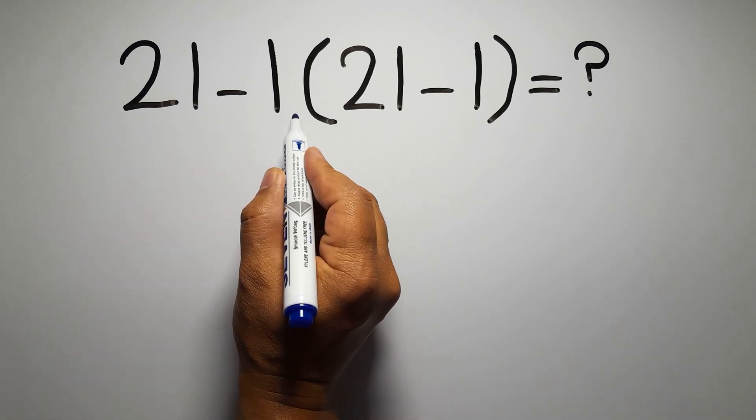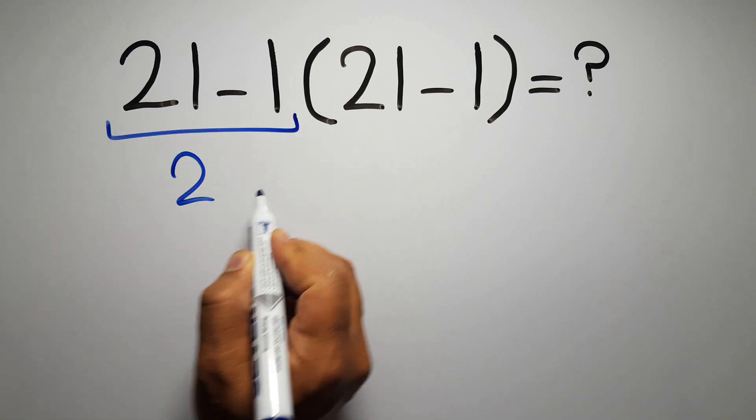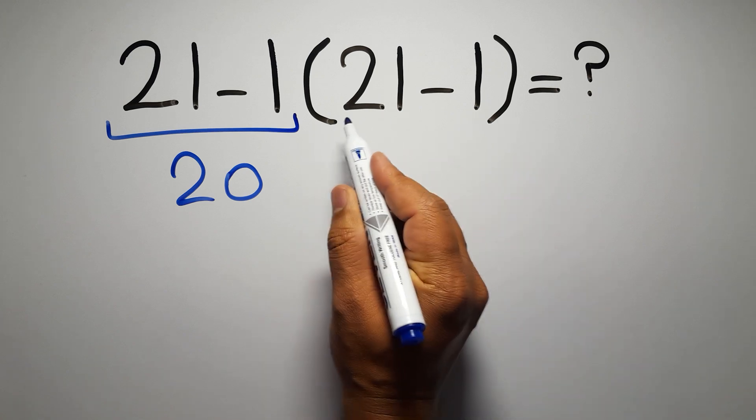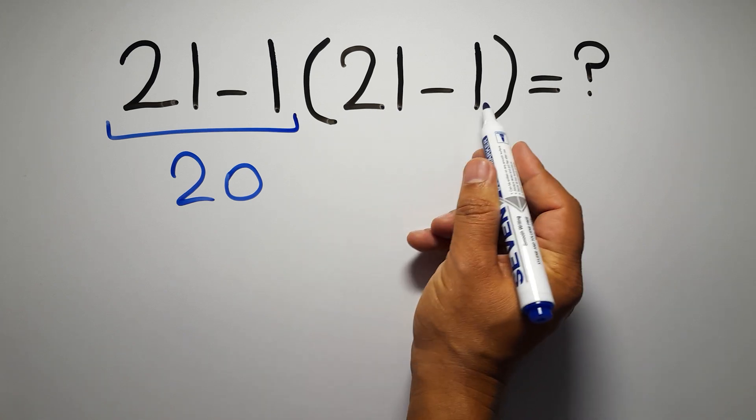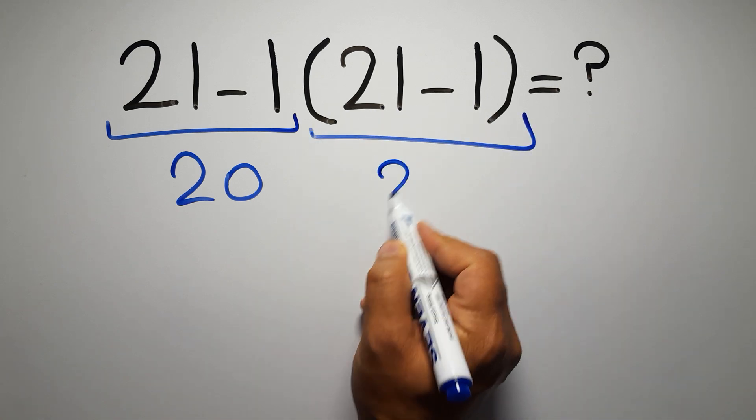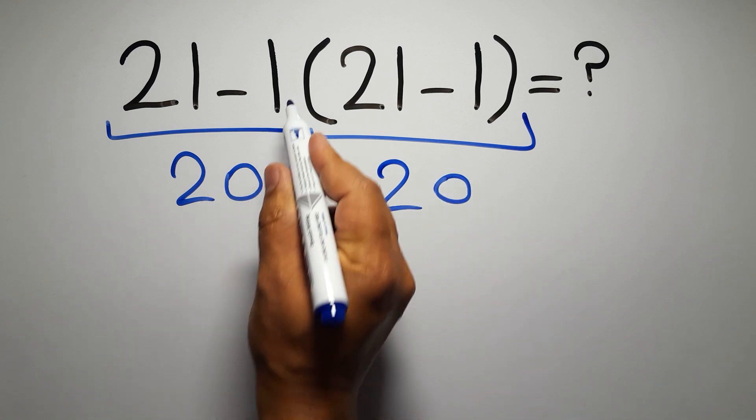21 minus 1 gives us 20, and again here inside this parentheses we have 21 minus 1, so 20 times 20 gives us 400.